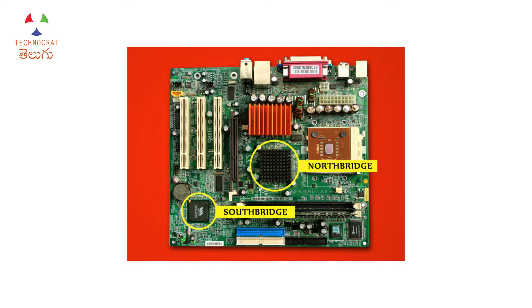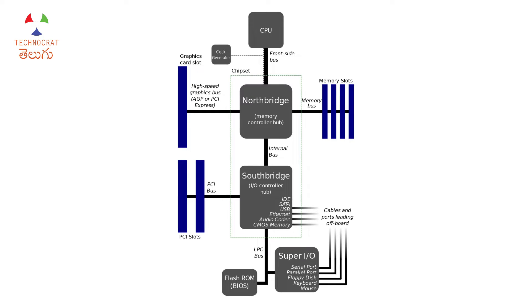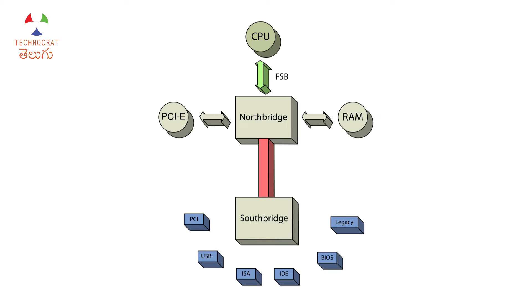If you place the motherboard in the upright position, you have a Northbridge in the northern part. The Northbridge connects to the CPU and PCIe slots. AGP is the Accelerated Graphics Port; PCIe is the Peripheral Component Interconnect Express port, and it is connected to the graphics cards. The Northbridge handles performance-sensitive components.